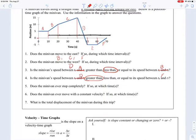Does the minivan ever stop completely? Yes, it does. It stops at A and it stops at E, because that's where the slope is zero.